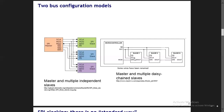The end slave will have to wait n times the clock signals required to transfer data to the first slave. For example, suppose we have 8 slaves and we are transferring 8 bits of data. If it requires 8 clock cycles to transfer 8 bits between two directly connected devices, then 8 clock cycles are required for slave 1, 16 clock cycles for slave 2, and 24 clock cycles for slave 3, and so on as multiples of 8.